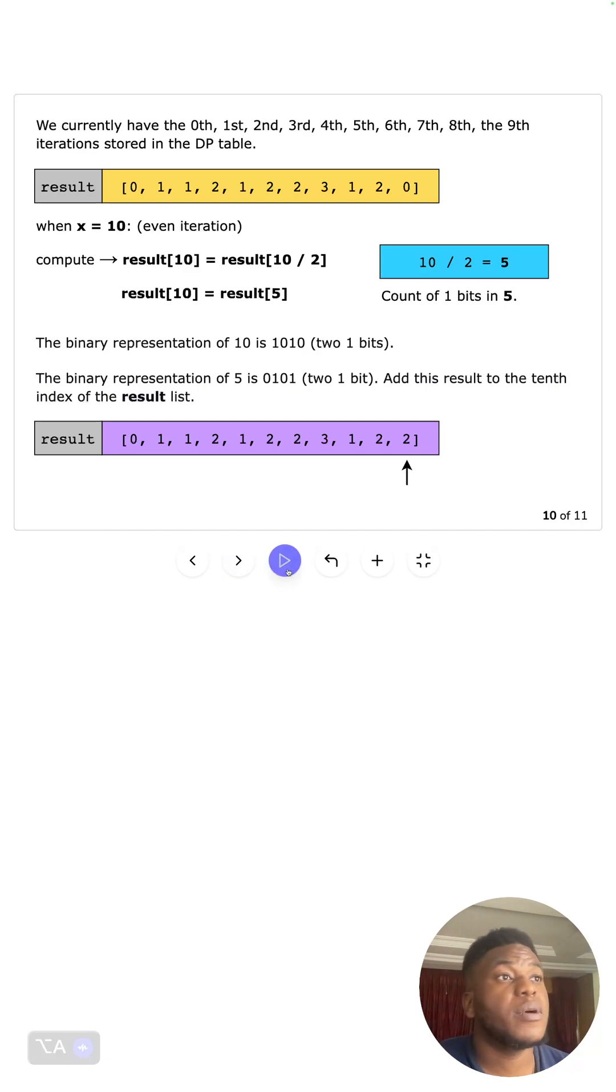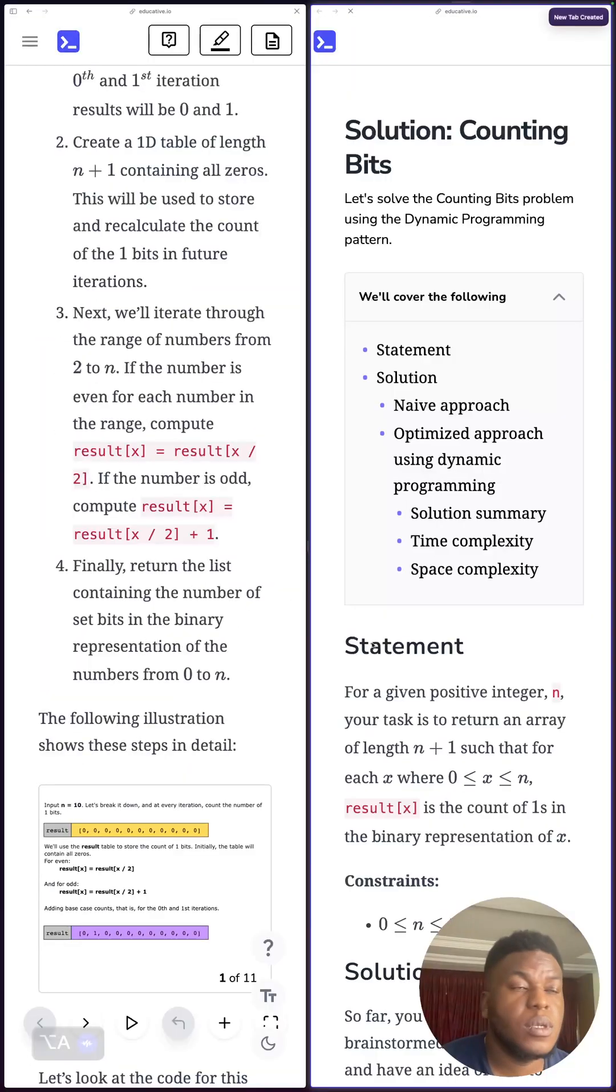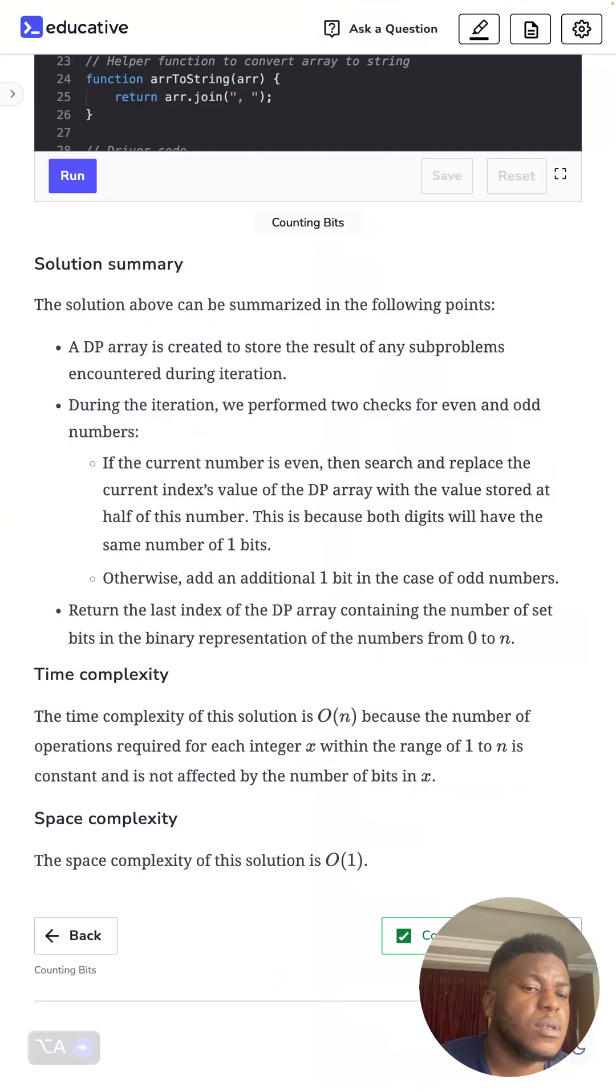Now let's look at the time complexity. You notice in the array we're only looping once through the entire array, so O(n), that's what O(n) represents.